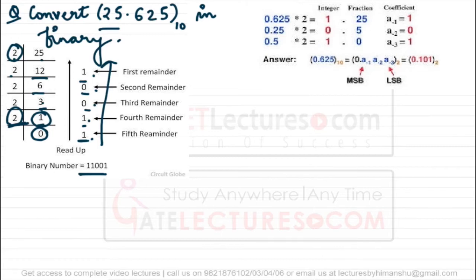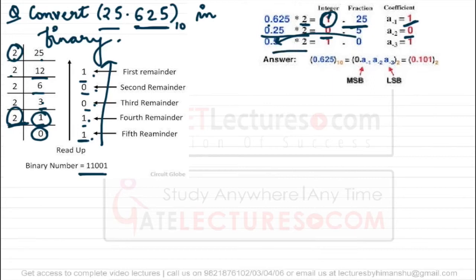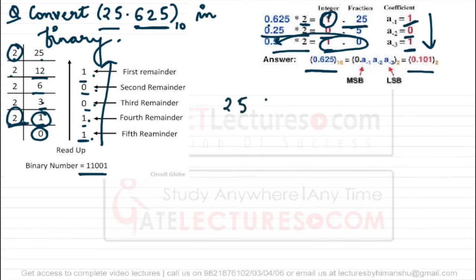Now look at the fractional part 0.625. We multiply it repeatedly by 2. 0.625 × 2 = 1.25 — integral part 1. 0.25 × 2 = 0.5 — integral part 0. 0.5 × 2 = 1.0 — integral part 1, and we stop since we get a complete integer. Reading top to down, the binary form of 0.625 is 0.101. So 25.625 in binary is 11001.101.